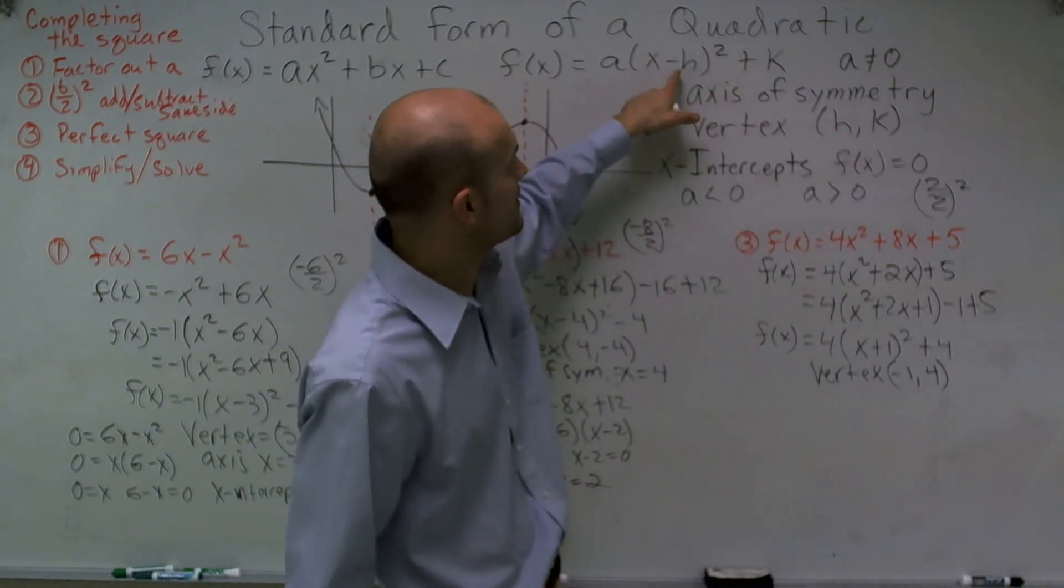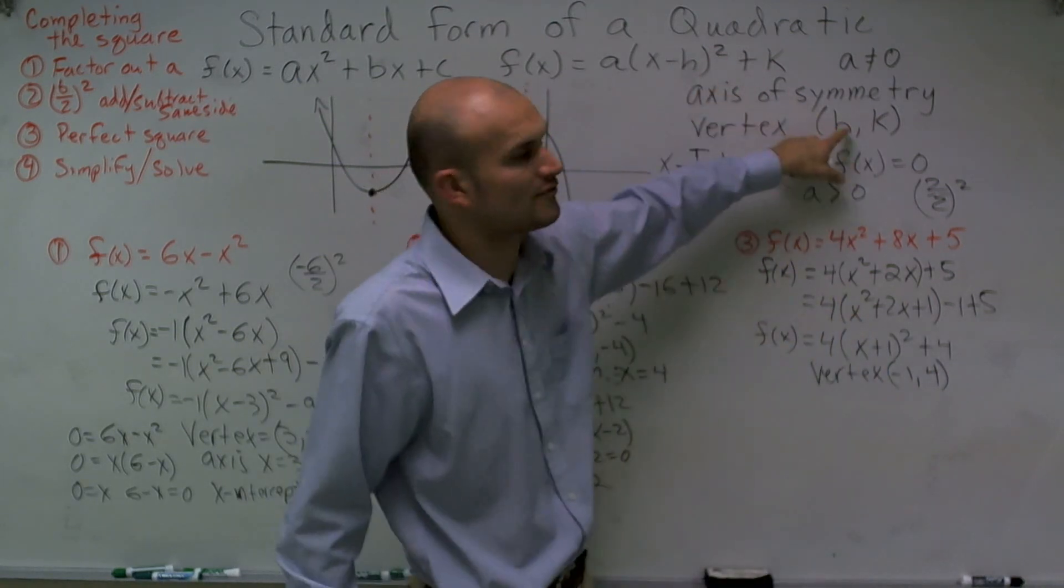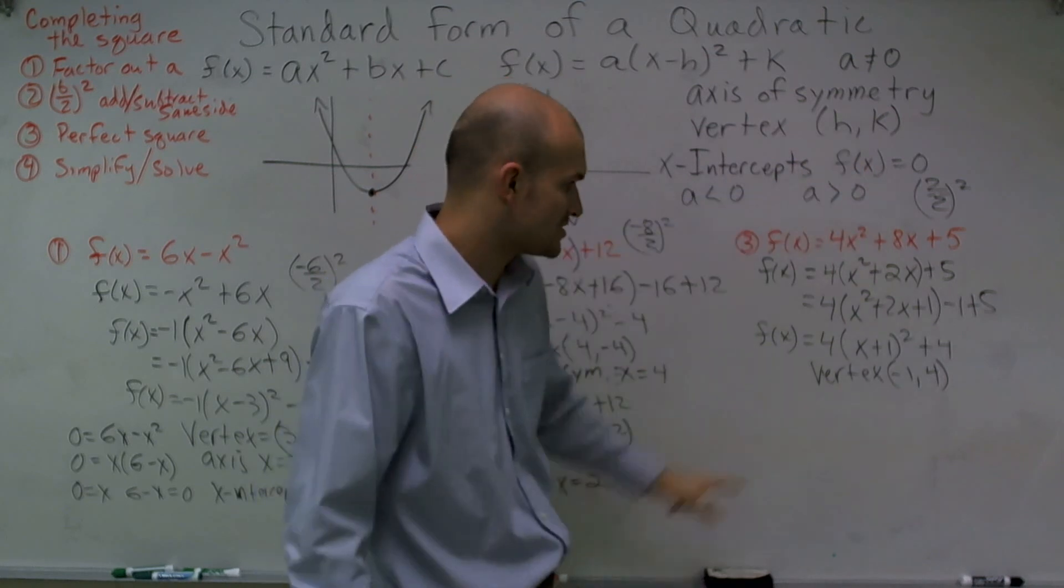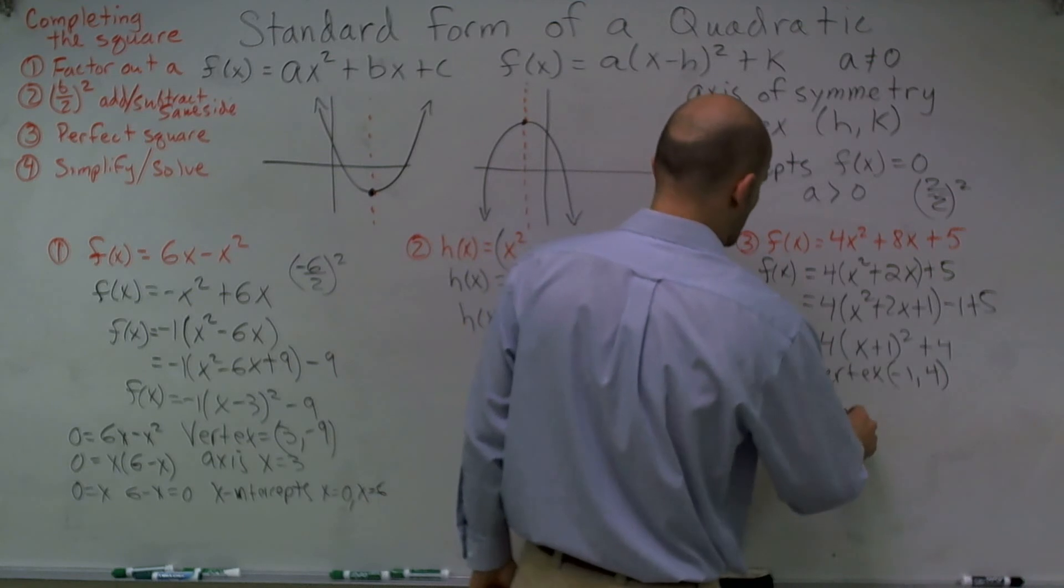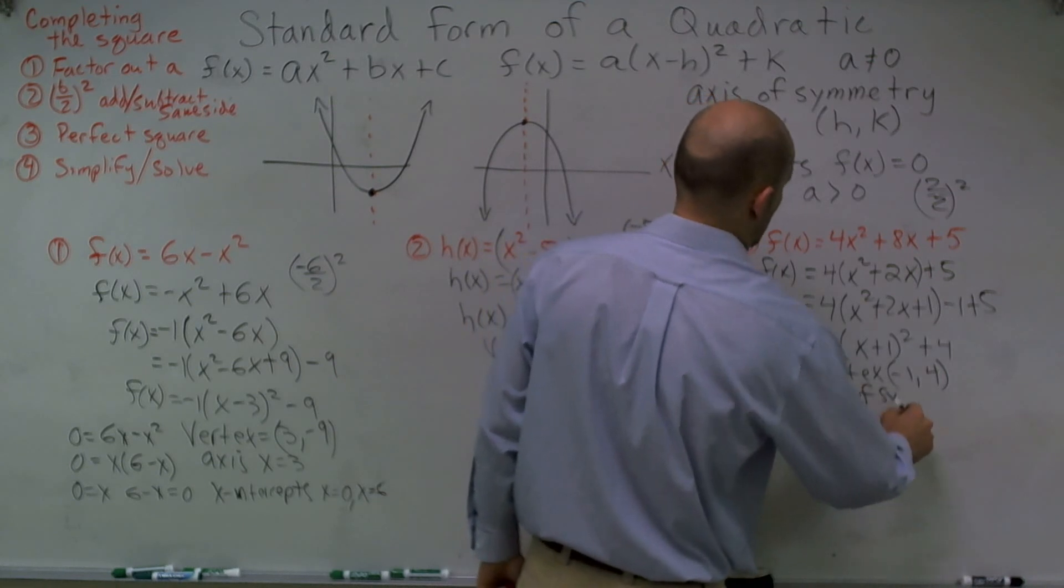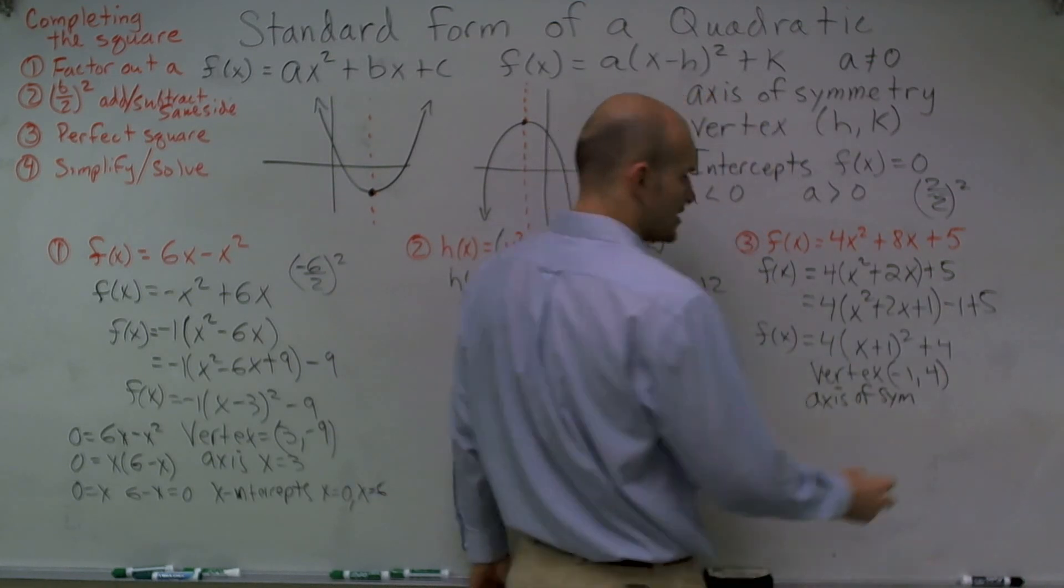Remember, your standard form is the opposite of h, so your vertex is the opposite of that, which would be h. So if it's a positive 1, your vertex is negative 1. My axis of symmetry is going to be x value of my vertex.